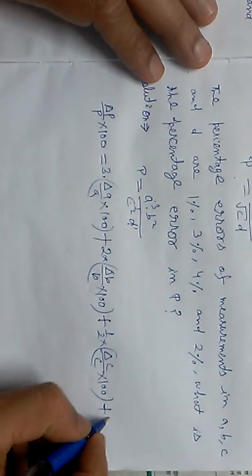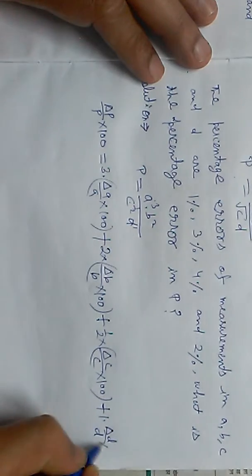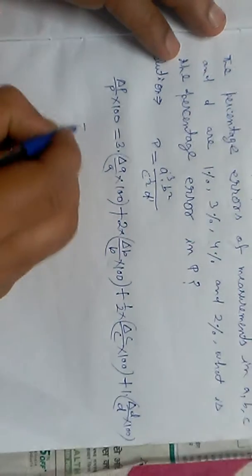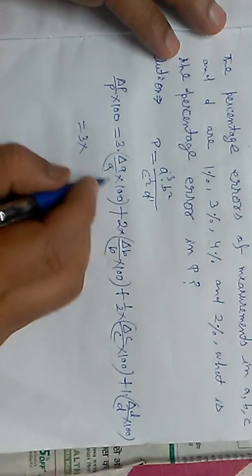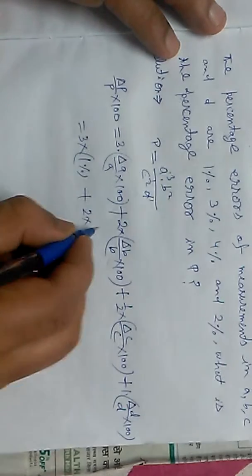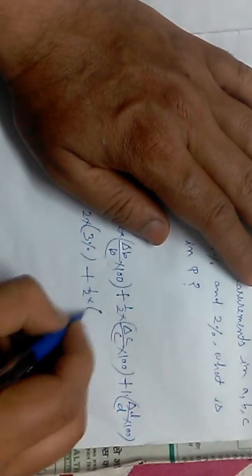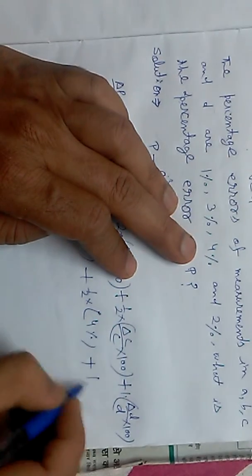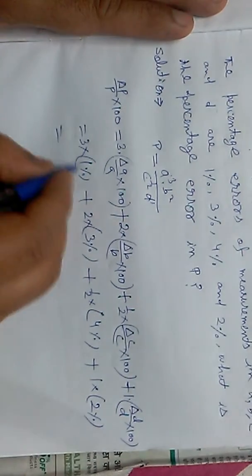Now we substitute the percentage values: 3 times 1% for a, plus 2 times 3% for b, plus one-half times 4% for c, plus one-half times 2% for d.